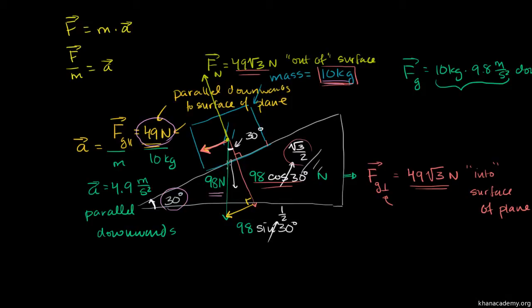The one component of the force of gravity that did not have any offset is the component parallel to the surface of the plane. We figured that out to be 49 newtons — essentially the weight of the block times the sine of the angle. If there are no other forces, the block would be accelerated in that direction. The rate of acceleration would be the force divided by the mass: 4.9 meters per second squared.